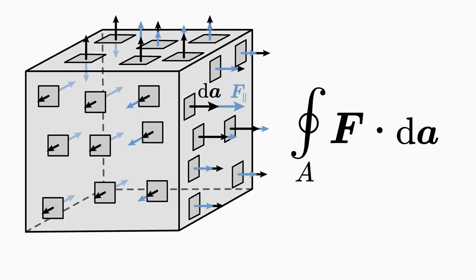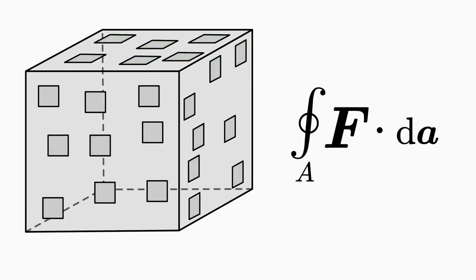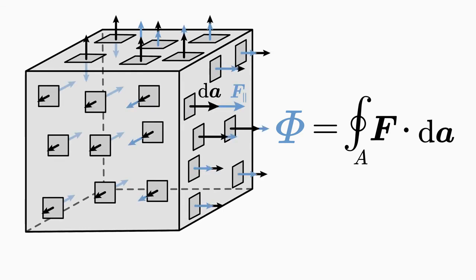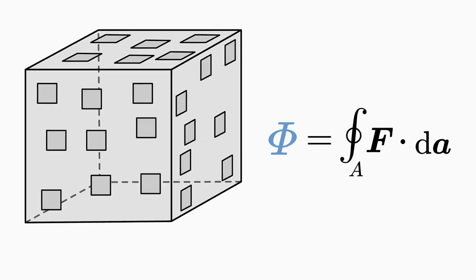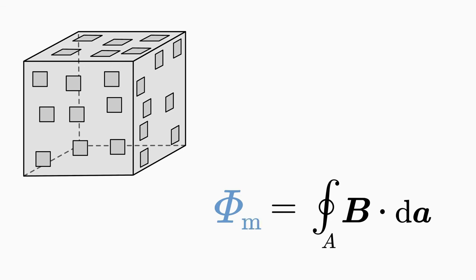The right-hand side of the divergence integral theorem thus sums up all the components of the vector field F that flow into or out of the surface A. Such an integral, in which small pieces of a surface are summed up, is called a surface integral. When the integrand is a vector field, this surface integral is called the flux Φ of the vector field F through the surface A — it measures how much of the vector field F flows out of or into the surface. If F is an electric field E, it is called electric flux; if F is a magnetic field B, it is called magnetic flux.